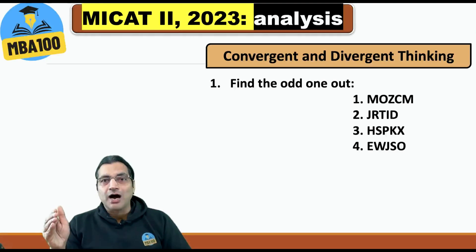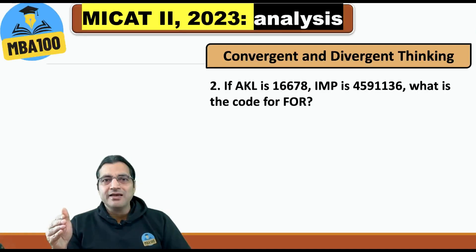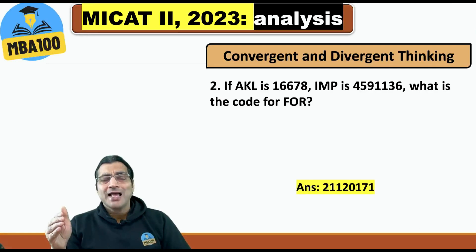Find the odd one out: M-O-Z-C, M-G-R-T, I-D-H-S, P-K-X-E, W-J-S-O. The answer was H-S-P-K-X. Similarly, if AKL is 16678 and IMP is 459, then 1136 was the code for 'for', and the answer is 21120171.